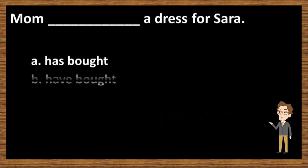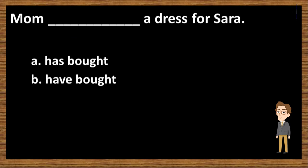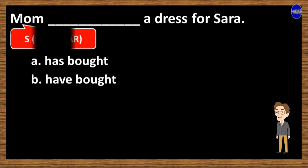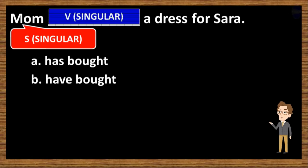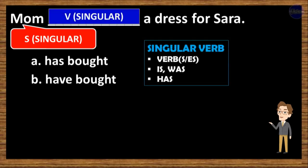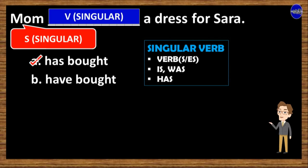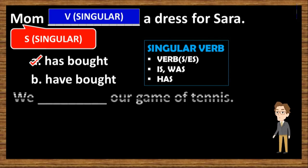Mom ___ a dress for Sarah. A, has bought. And B, have bought. The subject of the sentence is 'mom,' and it is singular. Then we have to use singular verb. So, the answer to this is option A — mom has bought a dress for Sarah.